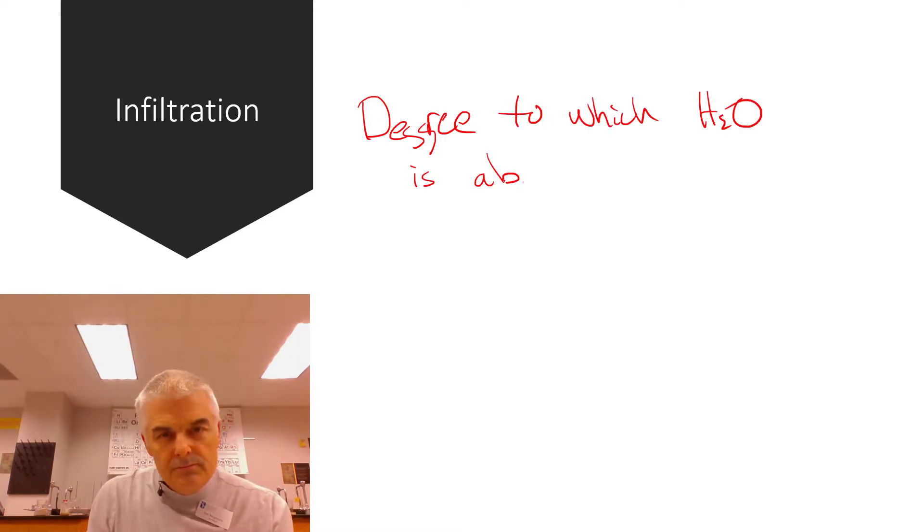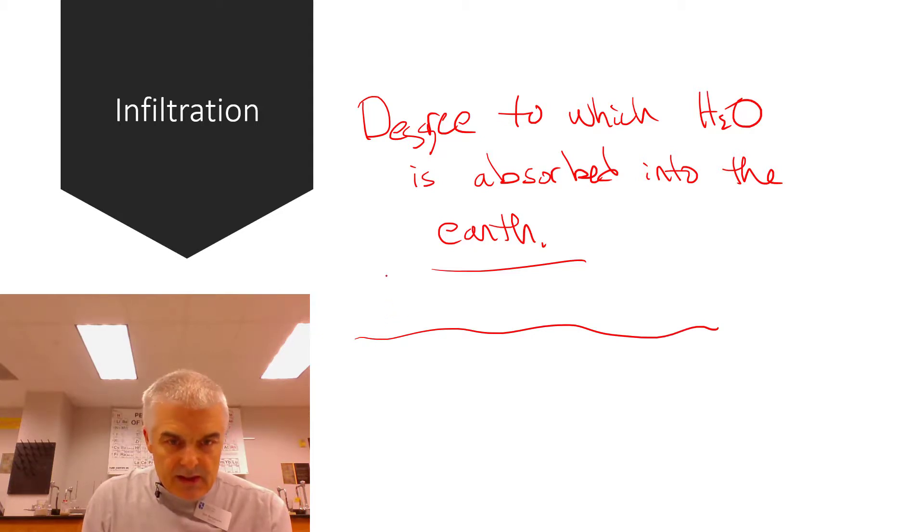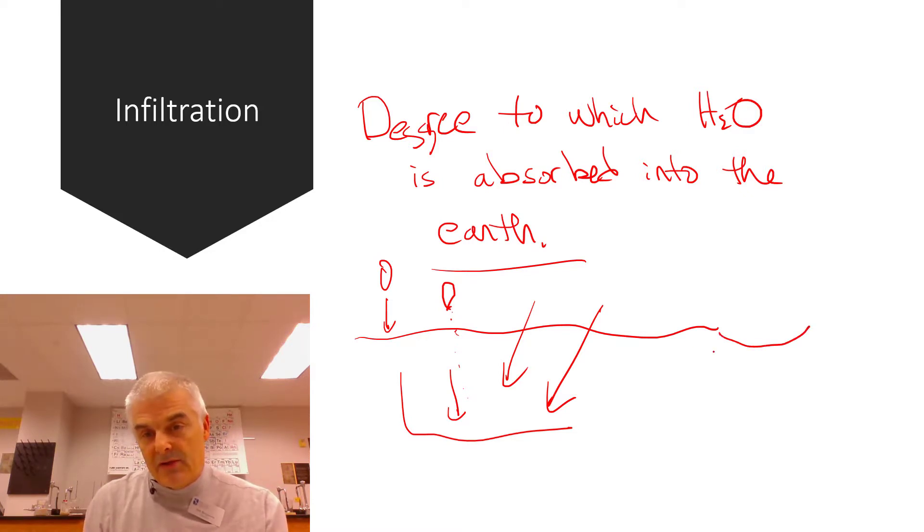Now, there's some terms that we need to define. The term infiltration - that is the degree to which the water is absorbed into the earth. So if I've got soil and it rains, it's a raindrop, then it's going to get absorbed into the soil. This is going to get to that groundwater we're referring to. Sometimes it doesn't infiltrate. It has to do with the type of rock. If this is a bedrock, then the water won't infiltrate. It will become a lake or a river or something like that. When it rains, sometimes the water just soaks into the earth. Where does it go?